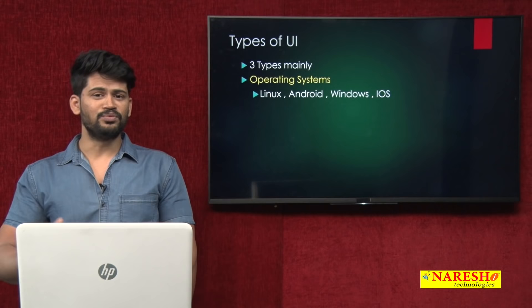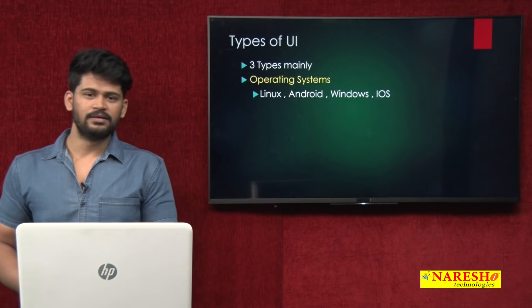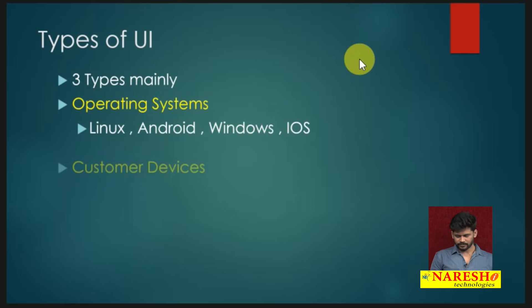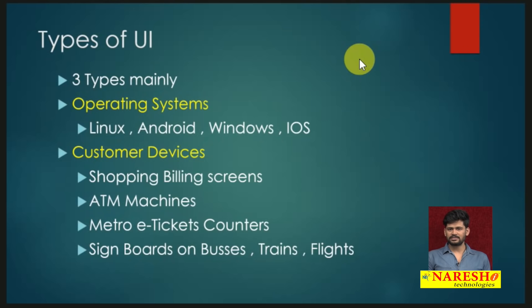Whatever interaction will happen, that is with the concept of operating system UI. Operating system is also one kind of UI. Next is customer devices. If you go to any shopping mall, there will be consumers and operators working on one kind of system — they are entering some information. That is also one UI.